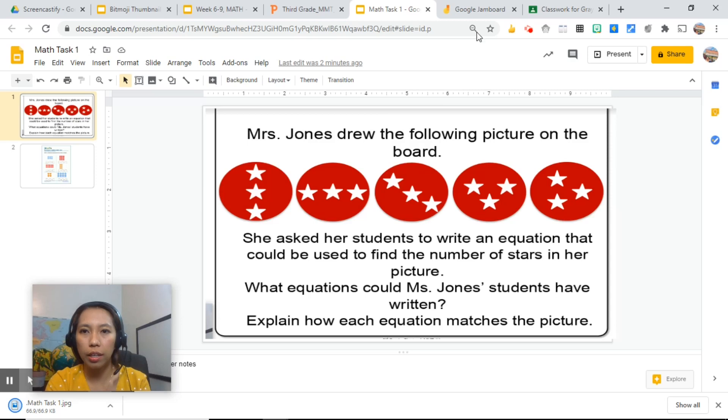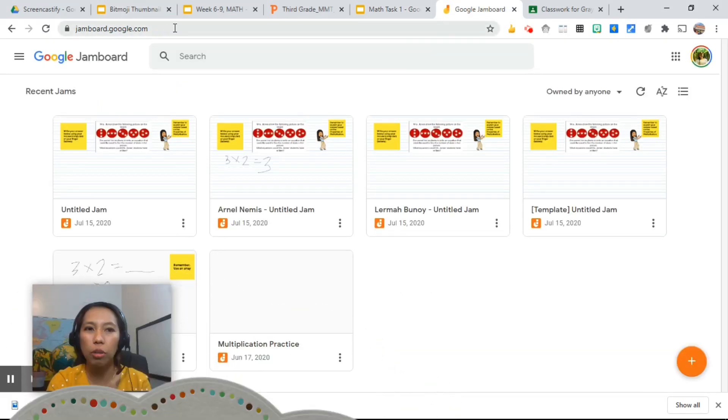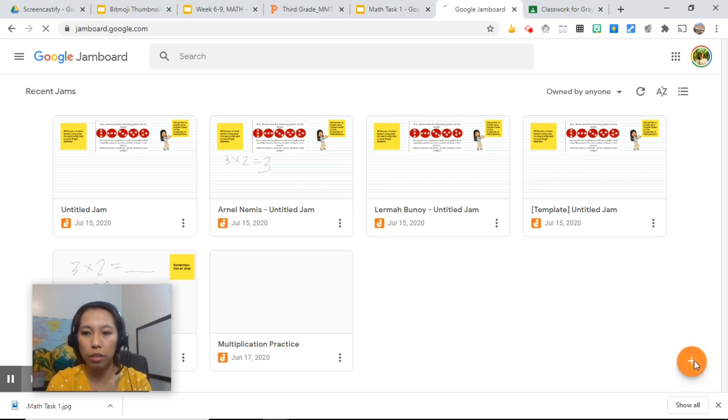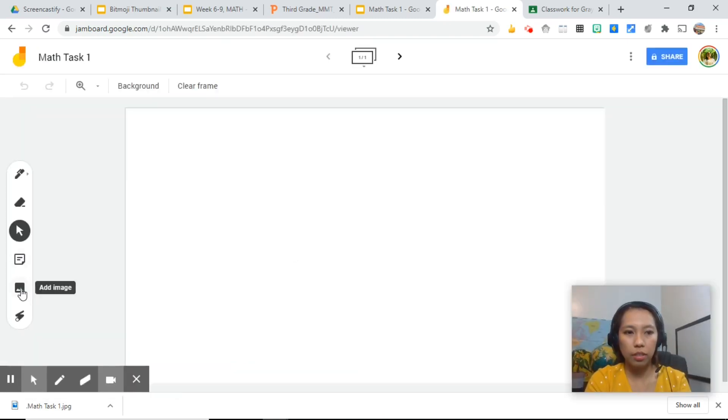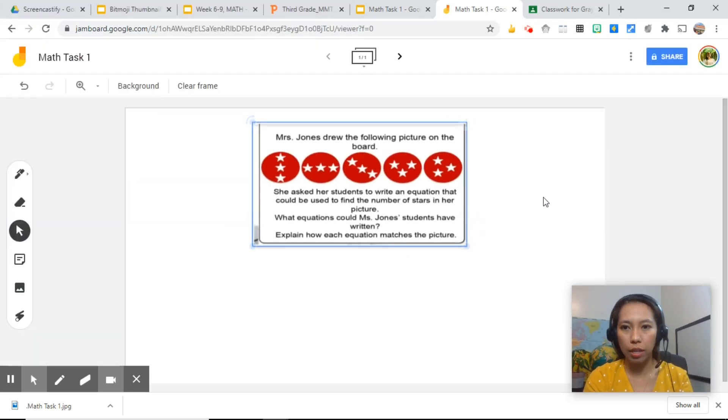And then we will go ahead on Google Jamboard, which is jamboard.google.com. Create a new whiteboard and insert the image that we have saved from our Google slide. Upload image. So this is their task.